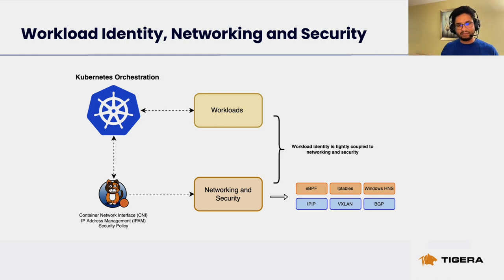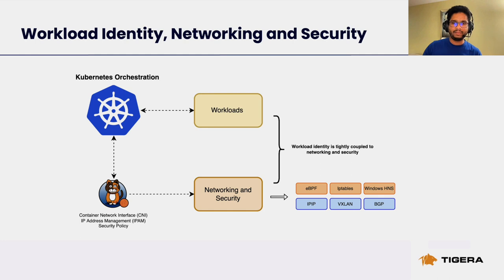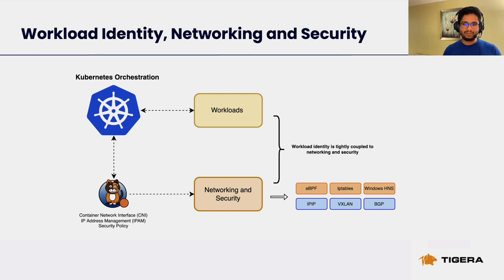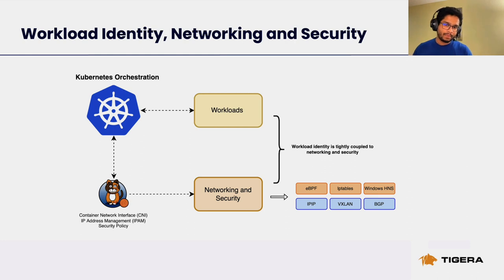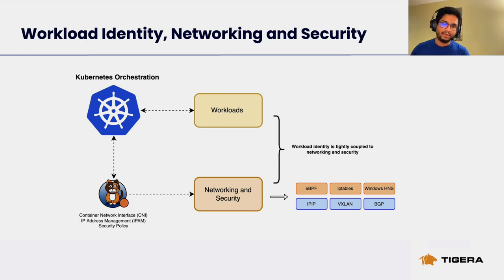With those challenges also comes an opportunity. Calico, among other functionalities, primarily offers the container network interface for Kubernetes, IP address management, and the security policy engine. Calico is quite flexible in the routing modes it supports as well as the data plane it supports for policy enforcement. For routing you can choose between IP-in-IP, VXLAN overlay modes, or native BGP. For the data plane you can choose between eBPF, IPTables, and Windows HNS if you have Windows nodes in your clusters.